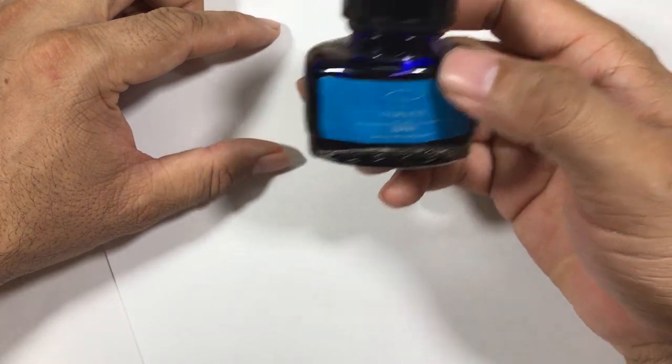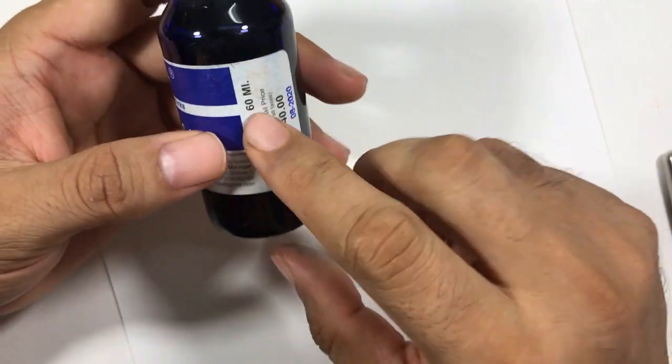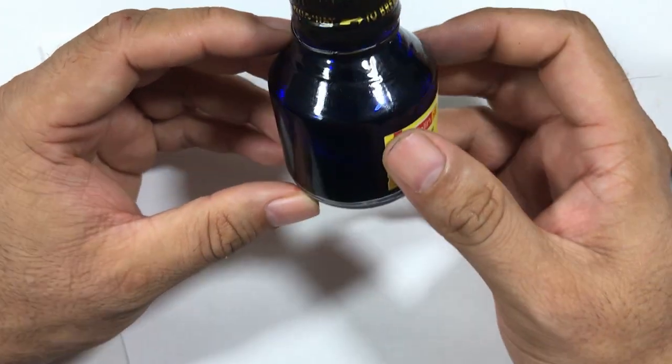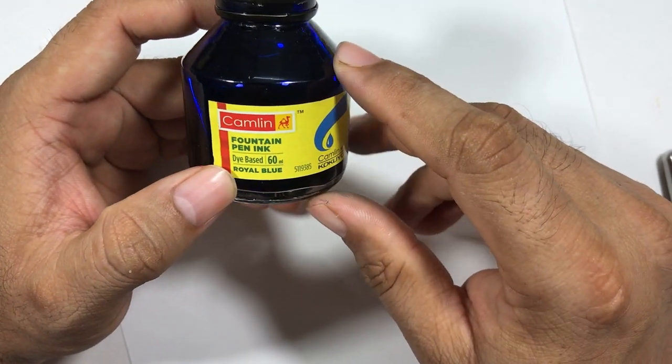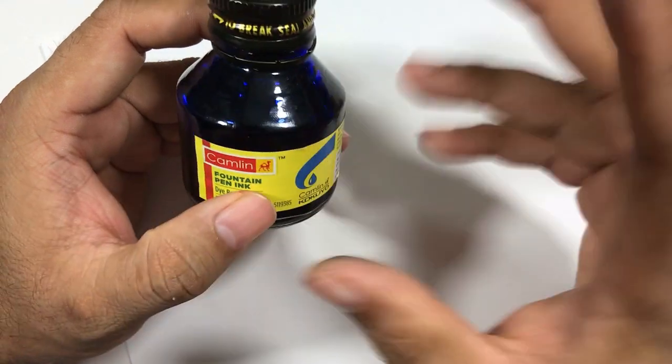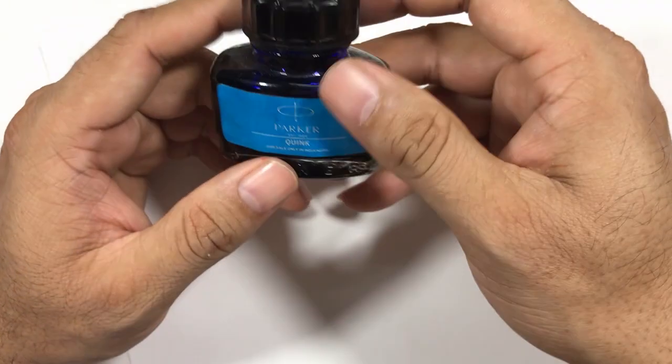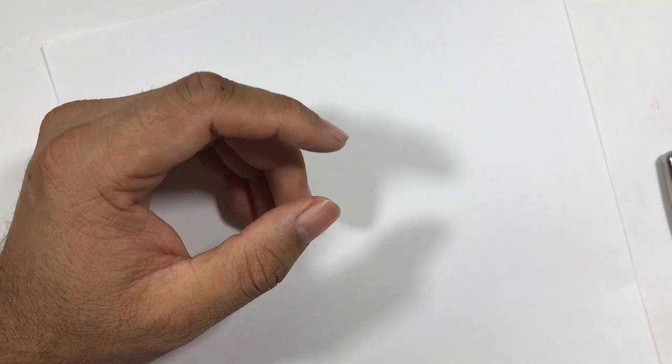This Daytone Royal Blue costs around 40 rupees for 60 ml. Camlin, I don't know the current cost because this is an old bottle I got around two years back, so for 16 ml it should cost around 50 rupees I suppose. And then we have Quink that costs around 50 rupees. So let's start, we'll open the bottles first.